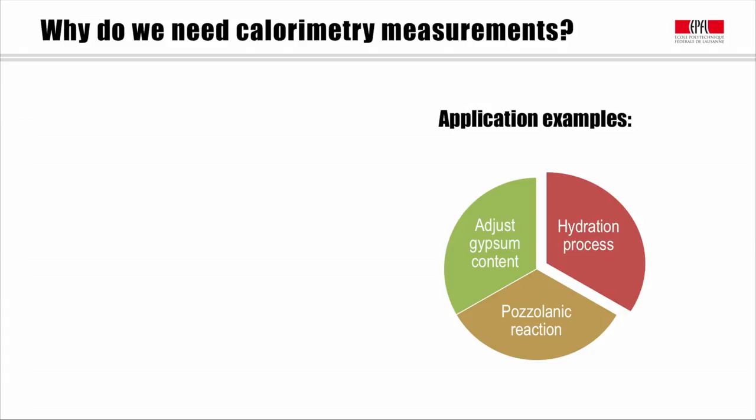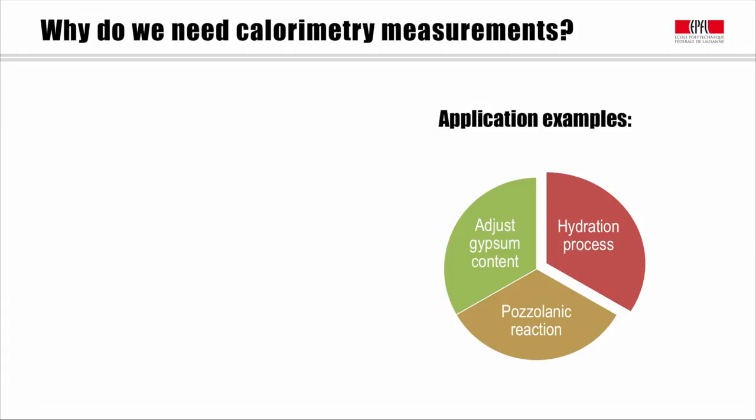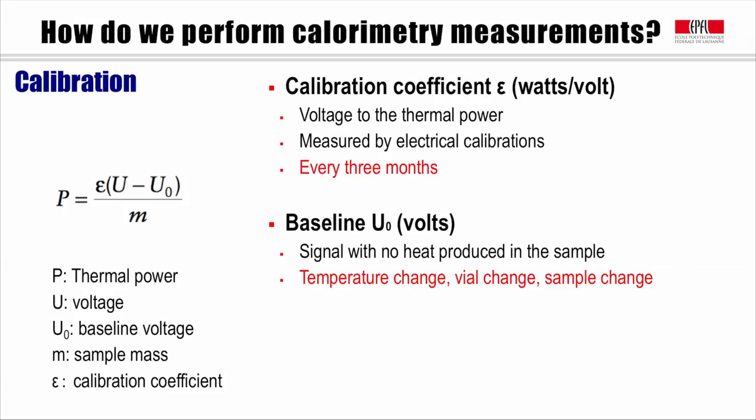Before we can perform a test, making sure that the instrument is in good condition is very important. This can be done by calibration. Isothermal calorimetry is actually a very stable instrument, but proper calibration will help to significantly reduce noise.